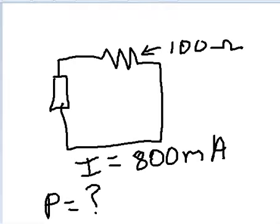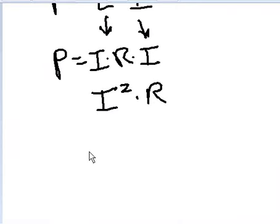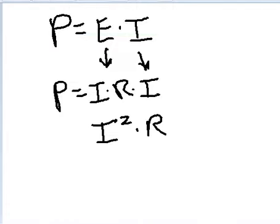Now what did we say the current was equal to? 800 milliamps. So current is equal to 800 milliamps. Oh, we've got to convert that.